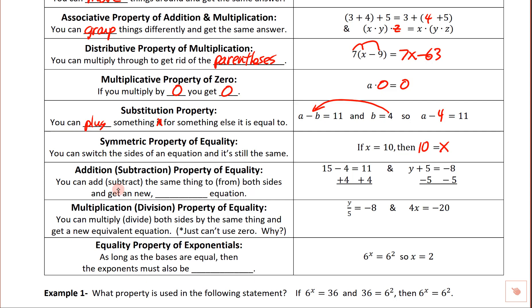Addition and subtraction property of equality — I've got an example: five minus four equals 11, which is true. If I add four to both sides, those are additive inverses, so they cancel to zero on the left, and on the right I have 11 plus four, which equals 15. You can add or subtract the same thing to or from both sides and get a new true equation. These two lines are sometimes called the golden rule of algebra: as long as you're doing the same thing to both sides, you're not going to mess anything up.